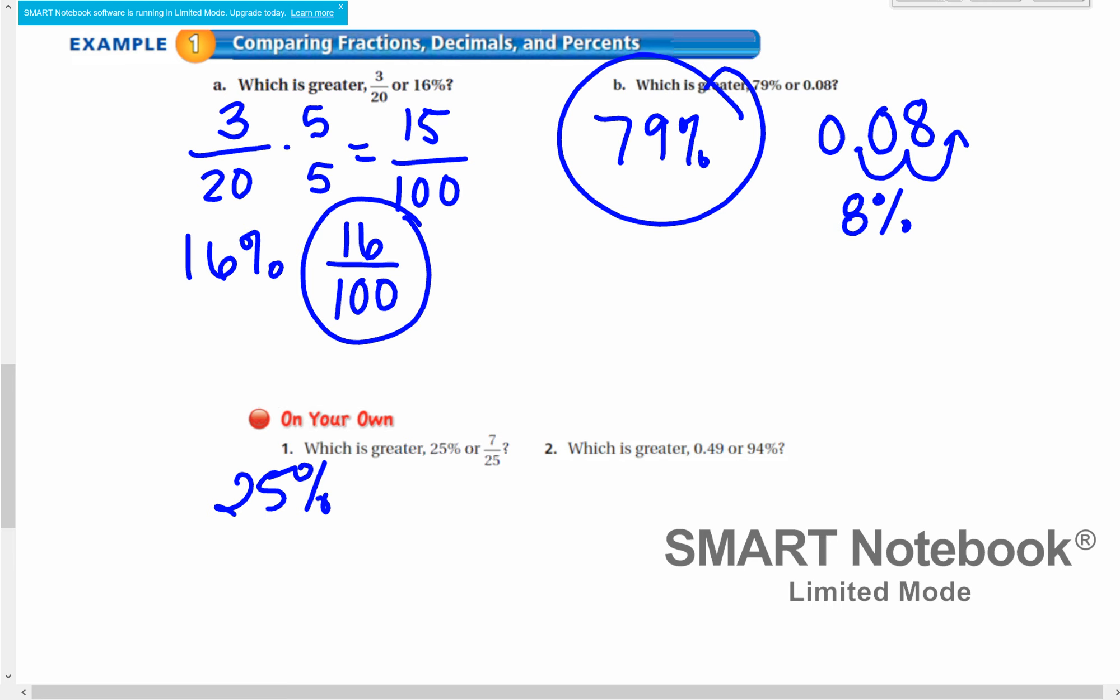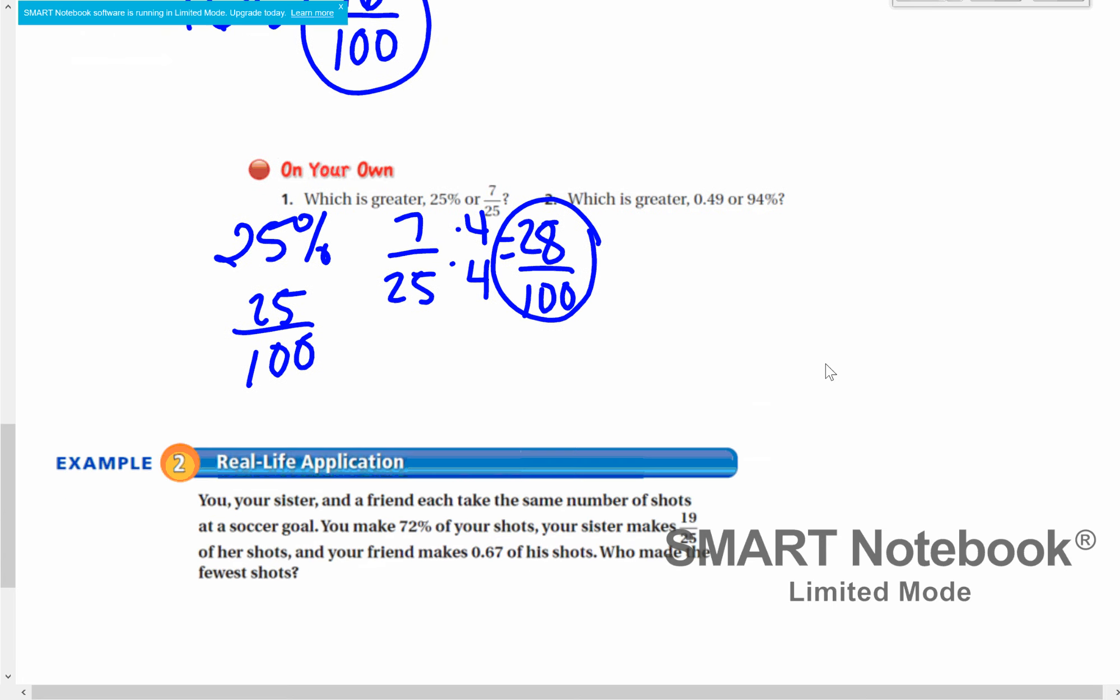25% I'm going to keep as a percent. 7 twenty-fifths I'm going to make into a fraction out of 100. So 25 times 4, 7 times 4, gives me 28 over 100. 25% would be 25 over 100. Therefore, 7 twenty-fifths is greater. For number 2, I'm going to make my decimal into a percent by moving it 2 to the right. We have 49% or 94%. 94% would be greater.